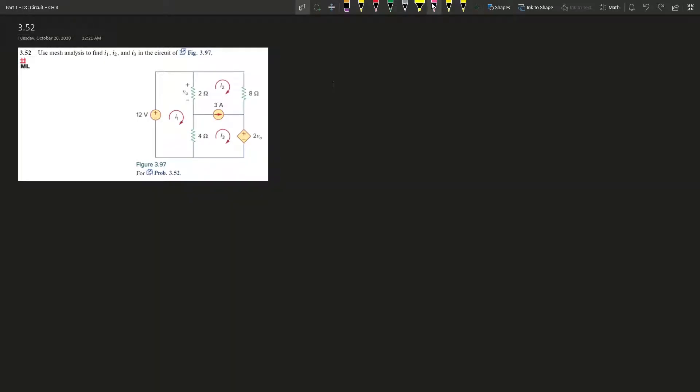Okay, and we have problem 3.52 here. It says use mesh analysis to find i1, i2, i3 in the circuit of the figure. So it's already drawn for us, so that's nice.